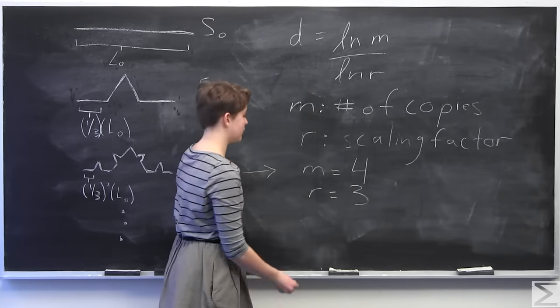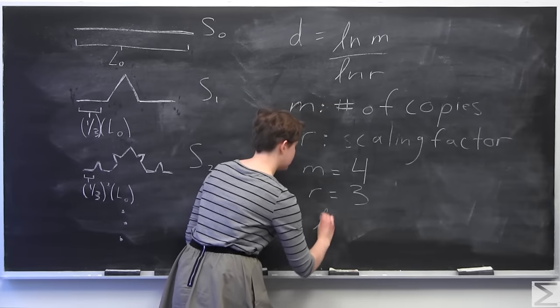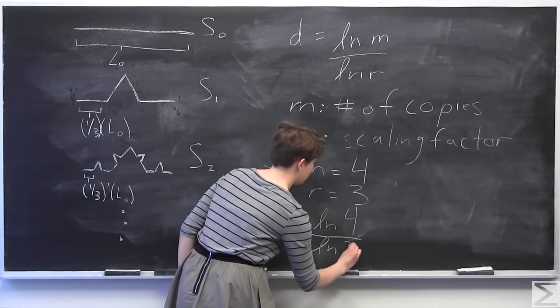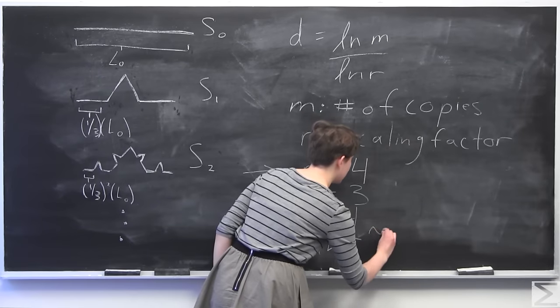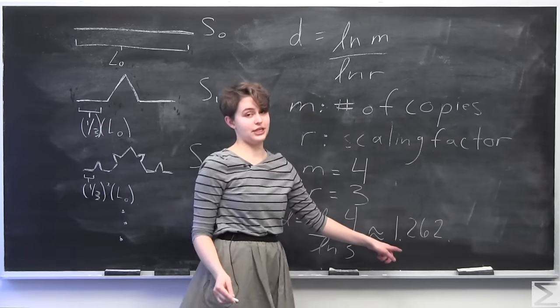So now plugging into our formula, we have the similarity dimension of this fractal is going to be ln 4 over ln 3, which approximately equals 1.262. So this is actually pretty interesting.